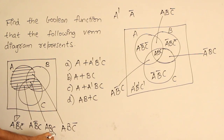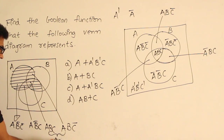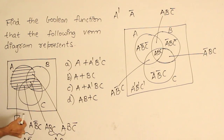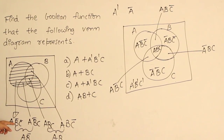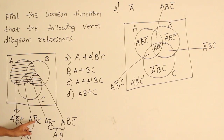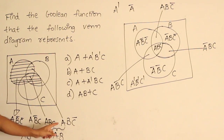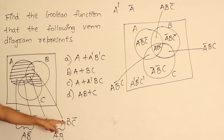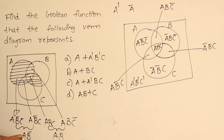If I combine A, B, C prime and A, B, C, I get A, B — pulling out common factor A, B, while C prime plus C equals 1. Similarly combining A, B prime, C prime and A, B prime, C gives A, B prime. Then combining A, B and A, B prime gives just A.